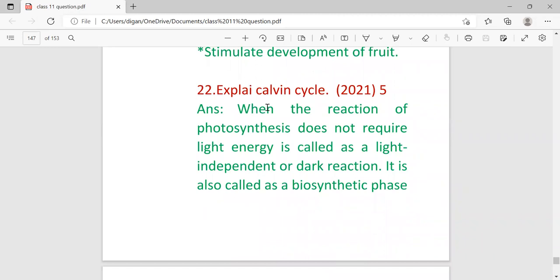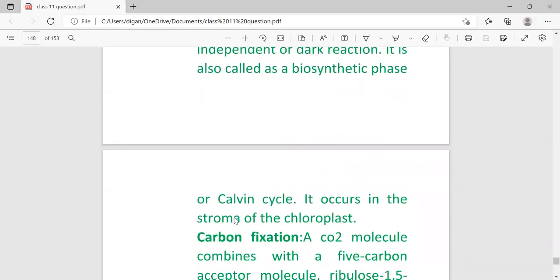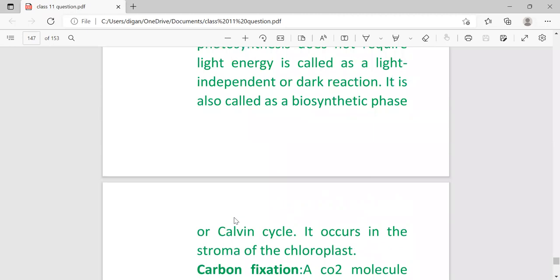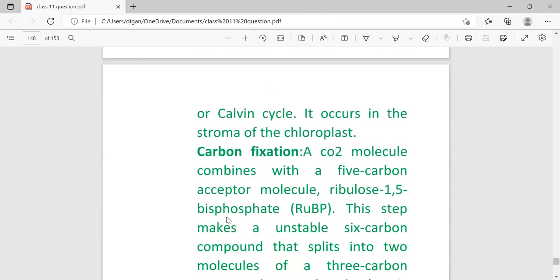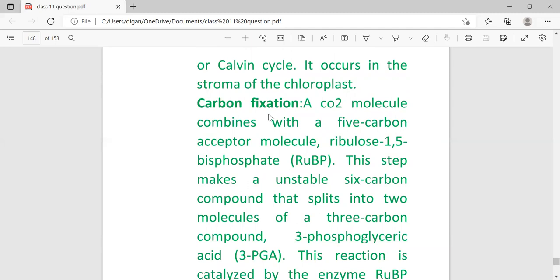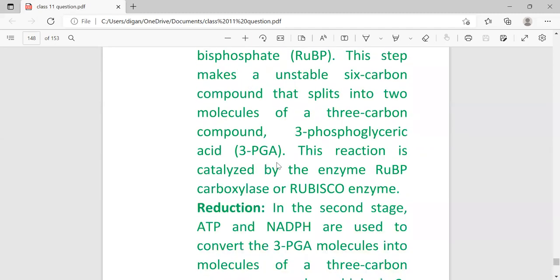Explain Calvin cycle. It last came in 2021 and carries five marks. When the reaction of photosynthesis does not require light energy, it is called light-independent or dark reaction. It is also called biosynthetic phase. It occurs in the stroma of the chloroplast. There are three steps in the Calvin cycle: First is carbon fixation. A carbon dioxide molecule combines with the five-carbon acceptor molecule ribulose-1,5-bisphosphate, or RuBP. This step makes an unstable six-carbon compound that splits into two molecules of three-carbon compound, 3-phosphoglyceric acid, or 3-PGA. This reaction is catalyzed by the enzyme RuBP carboxylase or rubisco enzyme.